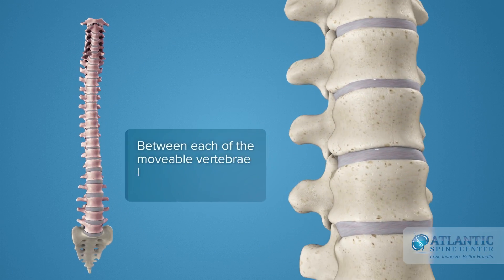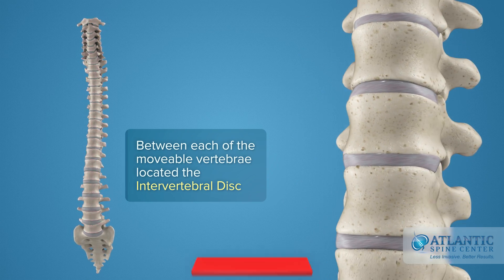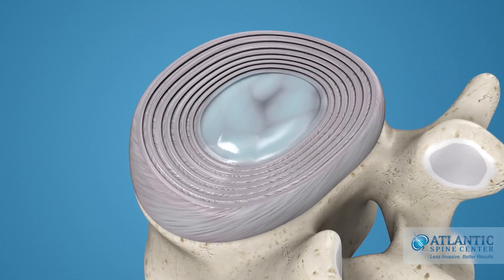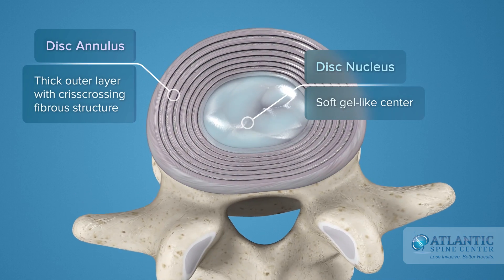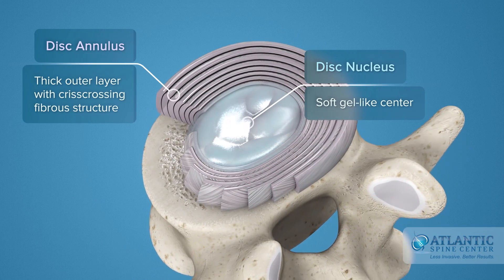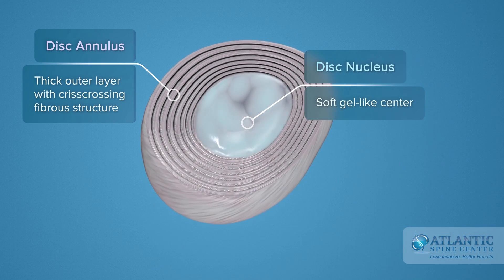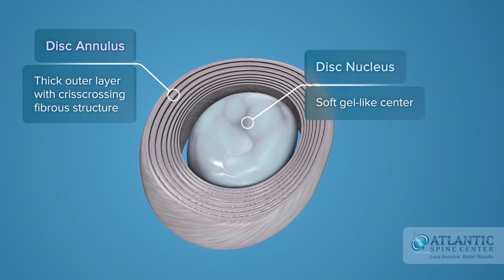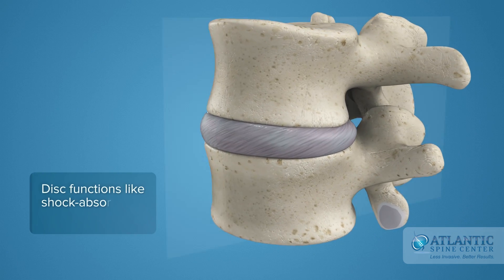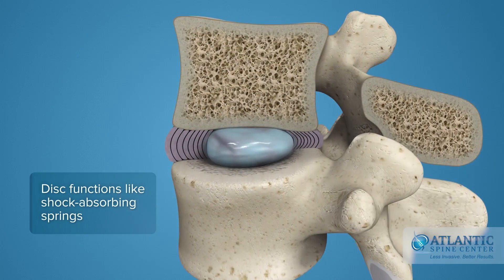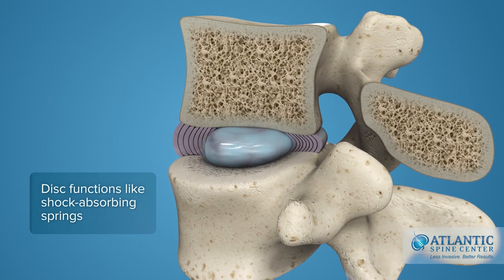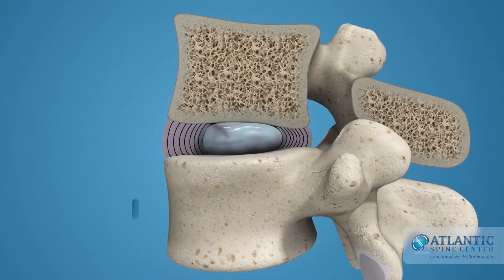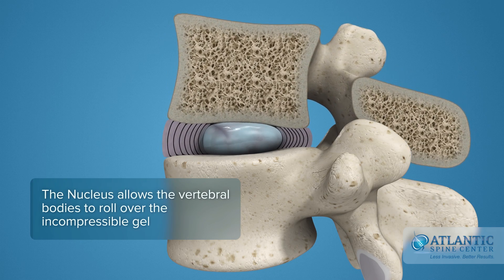Between each of the movable vertebrae is located the intervertebral disc. Intervertebral discs consist of a thick outer layer with a crisscrossing fibrous structure — the annulus — that surrounds the soft, gel-like center, the nucleus. Discs function like shock-absorbing springs. The annulus pulls the vertebral bodies together against the elastic resistance of the gel-filled nucleus.